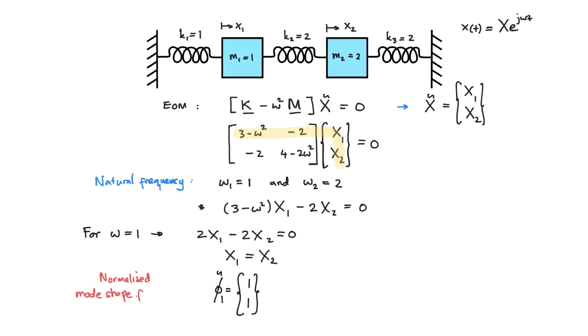Now for the second natural frequency where omega equals to 2, after we substitute to the equations, we have 3 minus 4 equals to minus 1. So we have minus x1 minus 2 x2 equals to 0, and from here we have x2 equals to minus a half x1.